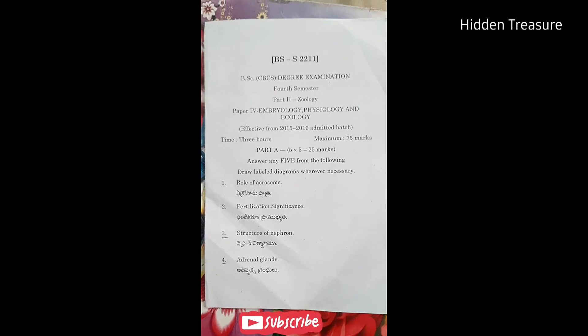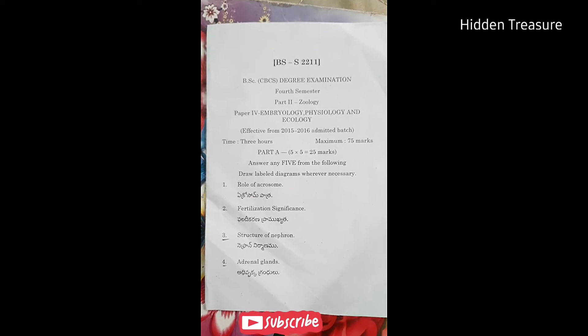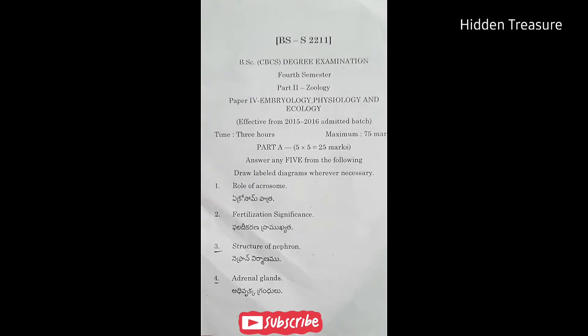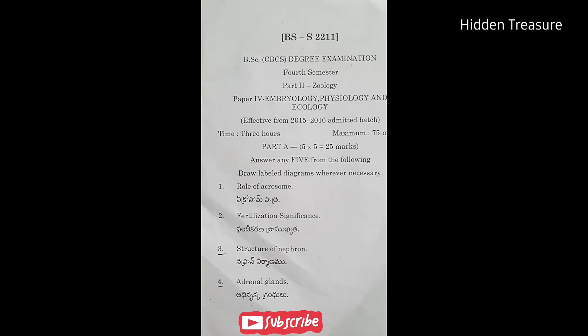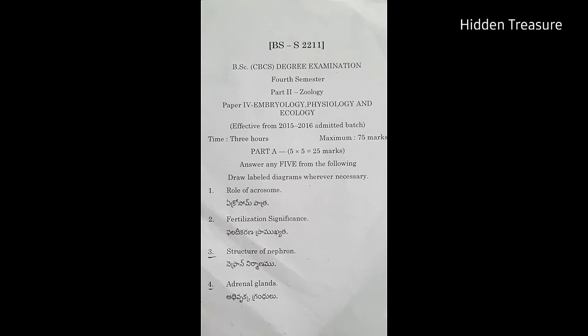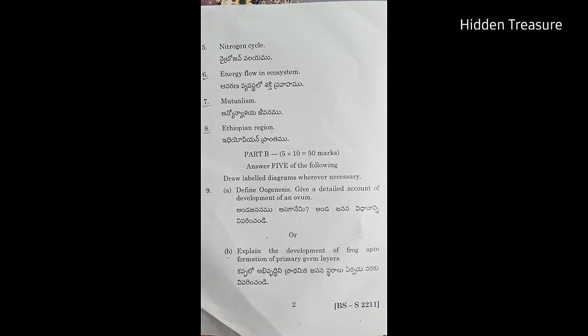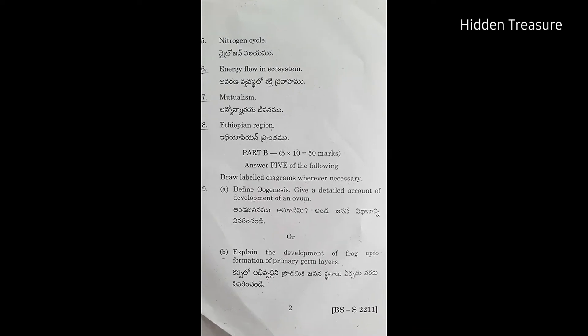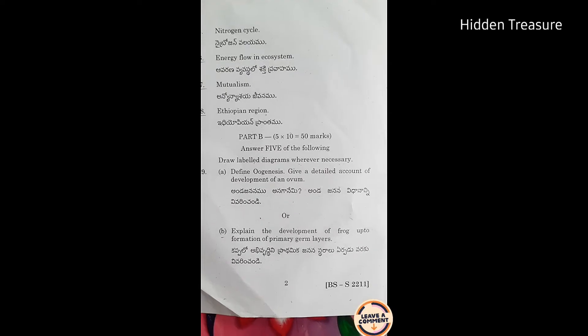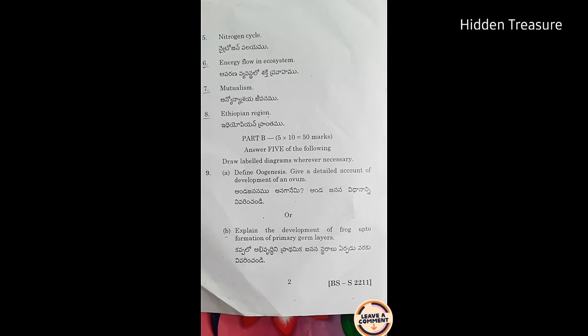Section A, 5-mark questions: 1st Question — Role of Acrosome; 2nd Question — Fertilization Significance; 3rd Question — Structure of Nephron; 4th Question — Adrenal Glands; 5th Question — Nitrogen Cycle; 6th Question — Energy Flow in Ecosystem; 7th Question — Mutualism and Ethiopian Region.